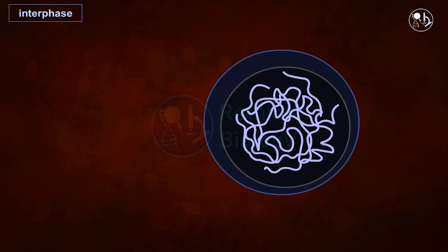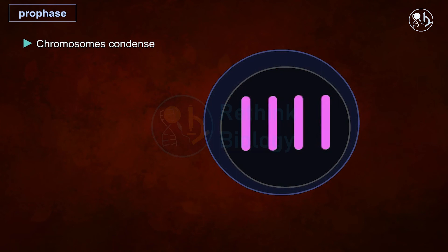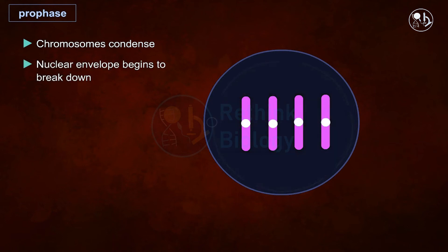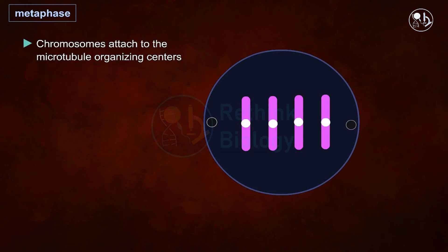In prophase, chromosomes get highly condensed and prepare for segregation. The nuclear envelope then breaks down, and microtubule organizing centers migrate to the opposite poles of the cell, which signals entry into metaphase.